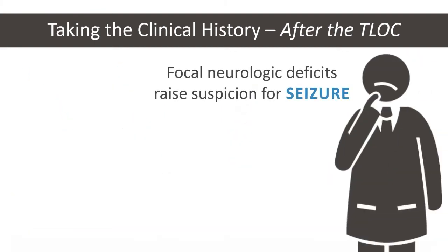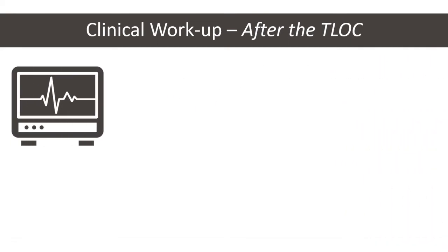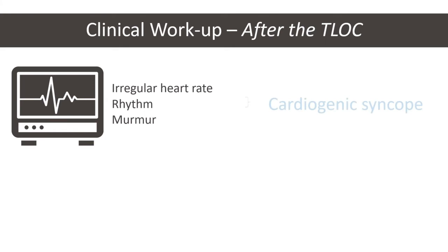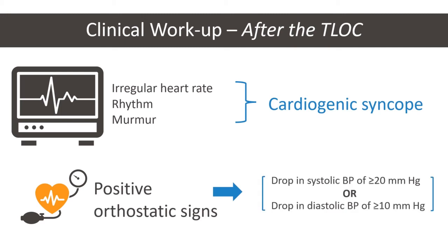Focal neurologic deficits raise suspicion for seizure. On the other hand, an irregular heart rate, rhythm, or murmur may suggest cardiogenic syncope. Finally, positive orthostatic vital signs are a strong indication of orthostatic hypotension.